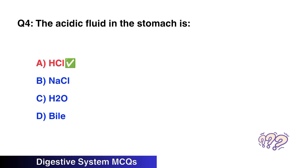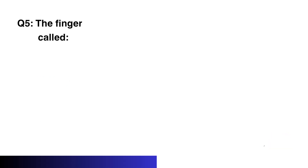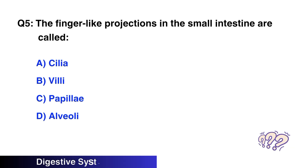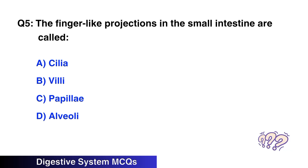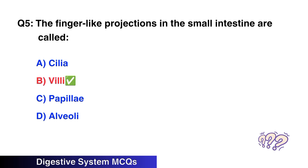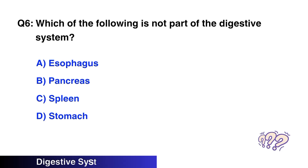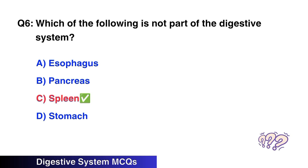Question number four: The acidic fluid in the stomach is? The right option is A, HCl. Question number five: The finger-like projections in the small intestine are called? The right option is B, villi.